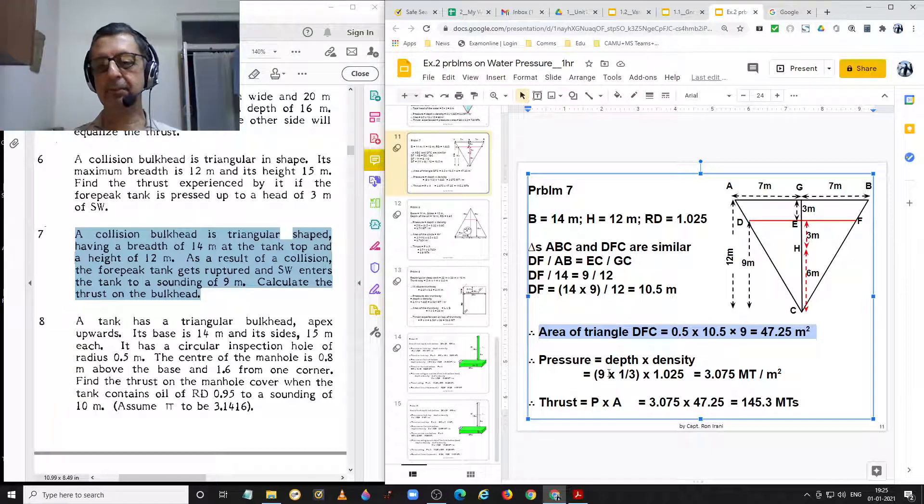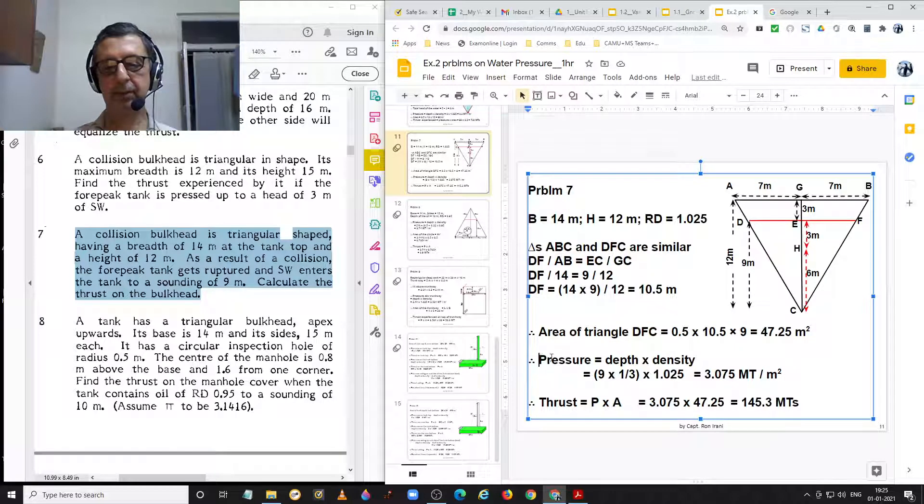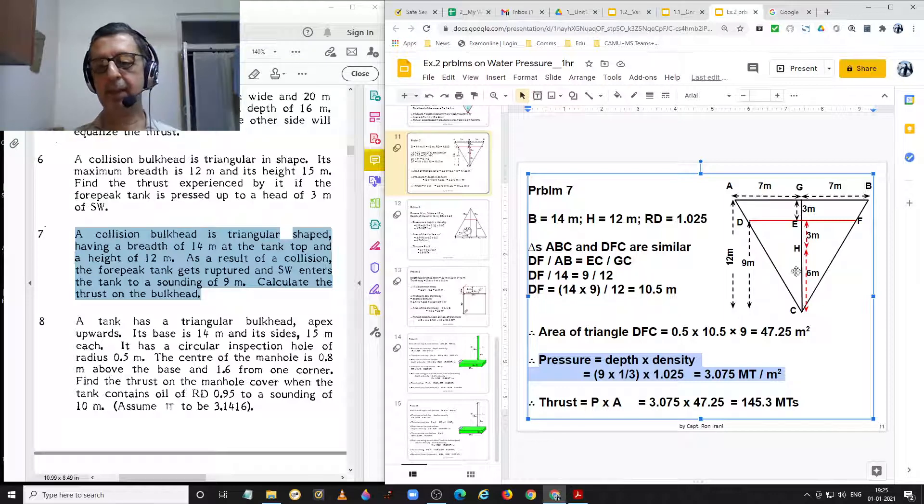And pressure, we know, is calculated at the centroid of a triangle, which is at the point H, which is 3 meters below the base of the triangle DFC. Therefore, pressure is equal to depth into density. Depth is 9 and one third of that will be 3 meters, multiplied by density 1.025, giving us pressure equal to 3.075 metric tons per square meter.